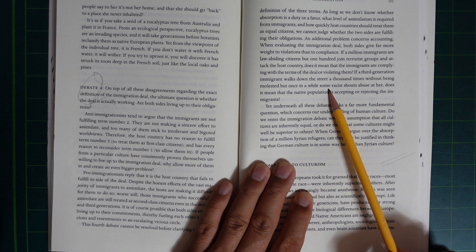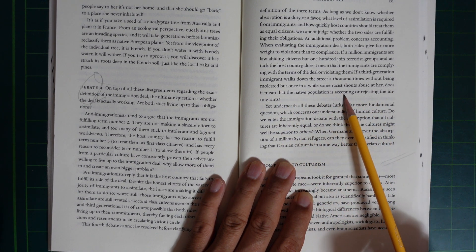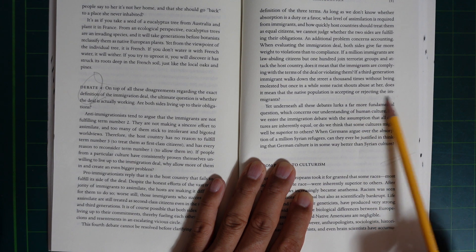If a third-generation immigrant walks down the street a thousand times without being molested, but once in a while some racists shout abuse at her, does it mean the native population is accepting or rejecting immigrants?